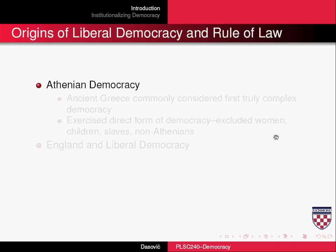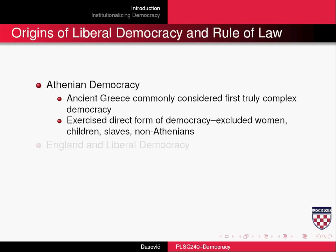Now, Athenian democracy — from a Western perspective, ancient Greece is commonly considered the first truly complex democracy. There was a direct form of democracy, although it was much easier to exercise direct forms of democracy when much of the populace was excluded: women, children, slaves, and all non-Athenians. So adult male Athenians were the only individuals considered citizens, and who were thus able — indeed, required — to directly take part in democracy.